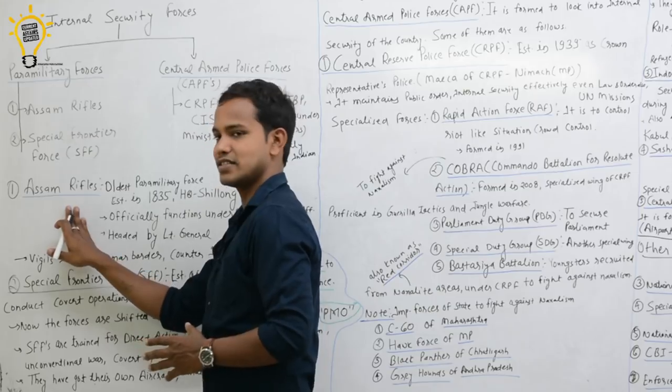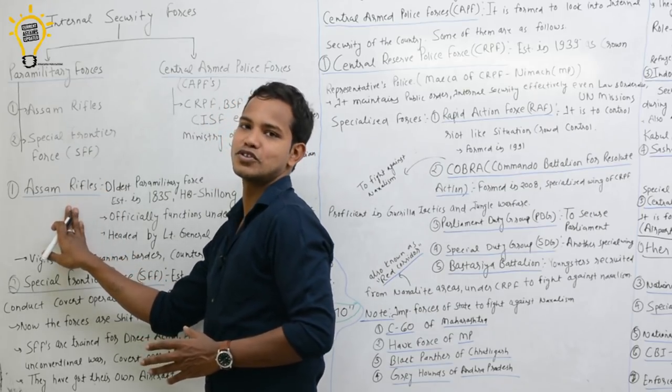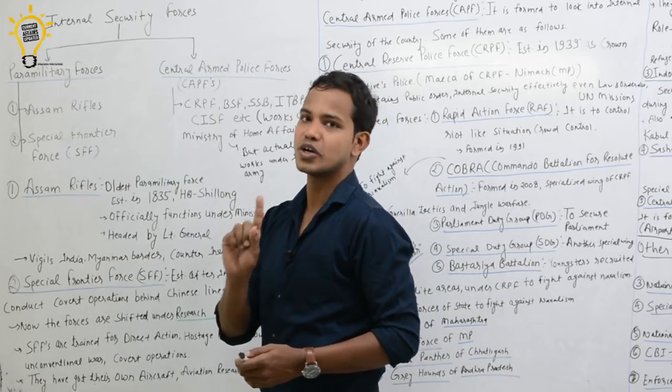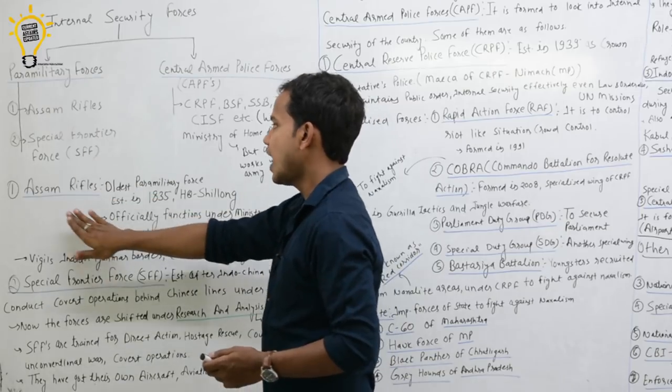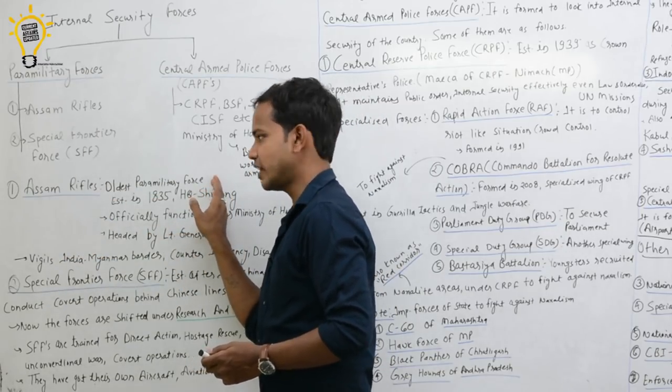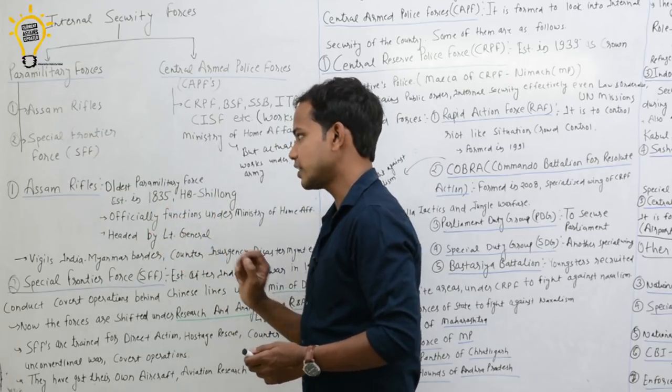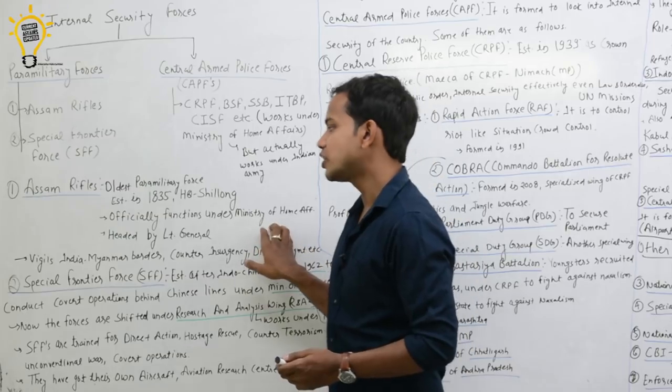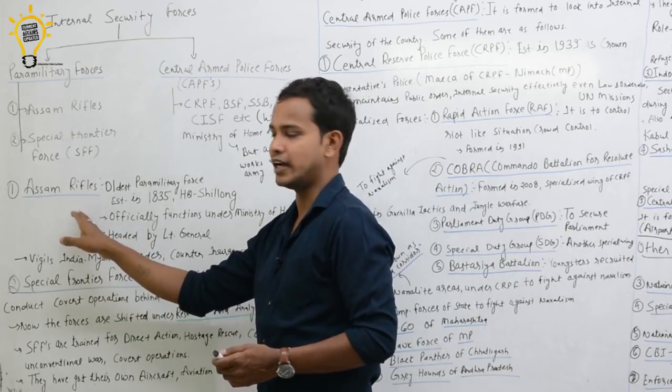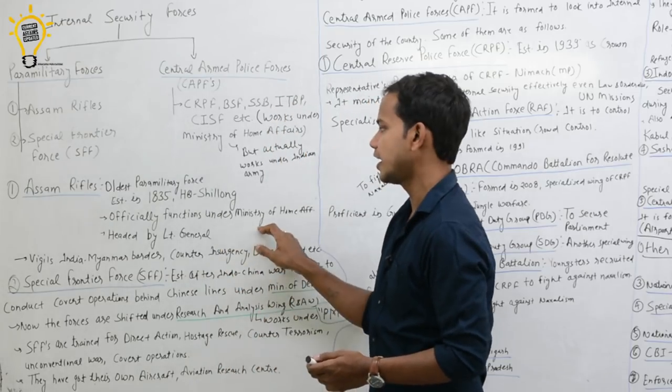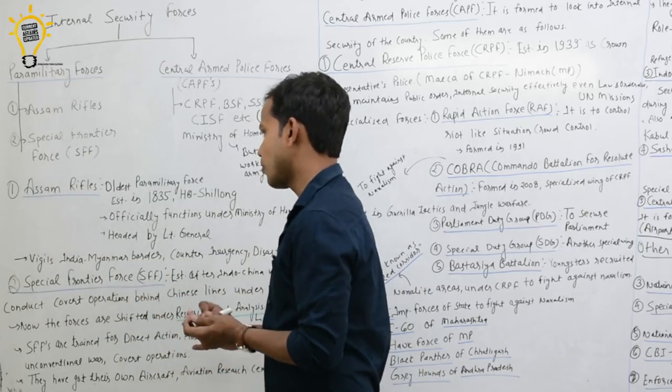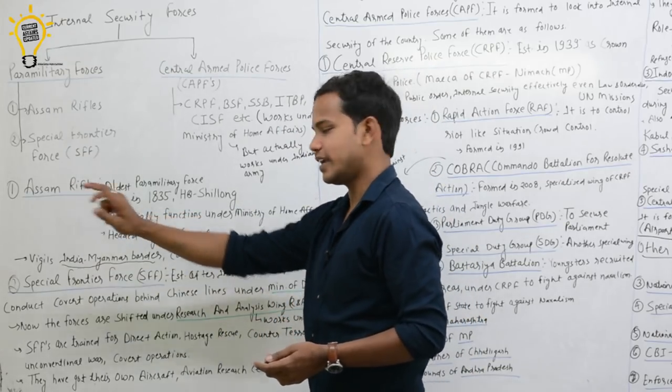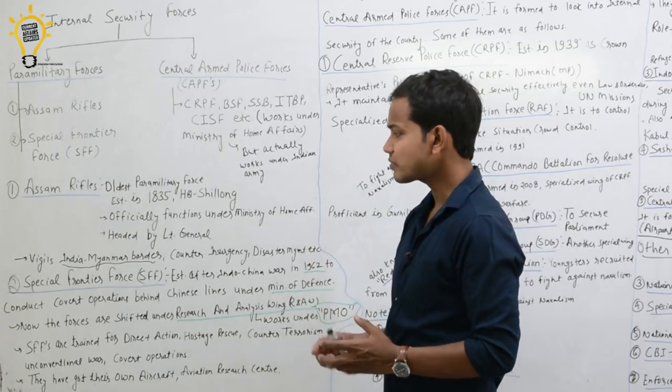Assam Rifles: the most oldest paramilitary force in India. Established in 1835, headquarter at Shillong. This is important because it is paramilitary forces, functions under Ministry of Home Affairs, but personnel are normally from Indian Army, which are drawn directly. This is headed by Lieutenant General, Indian Army. Main work is the Indo-Myanmar border. The most important work is protecting the Indo-Myanmar border. This is for counter-insurgency and disaster management.